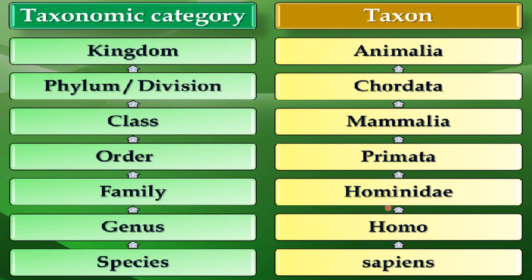For example, rice, wheat, and maize are all plants that come under the kingdom Plantae. Plantae is a kingdom and also a taxon. Under that kingdom there are separate classes and families. Wheat represents a separate taxon, and rice also represents a taxon. So plants represent a taxon, and under the plants each individual plant can also represent a taxon — a taxon can be at any level of the category.